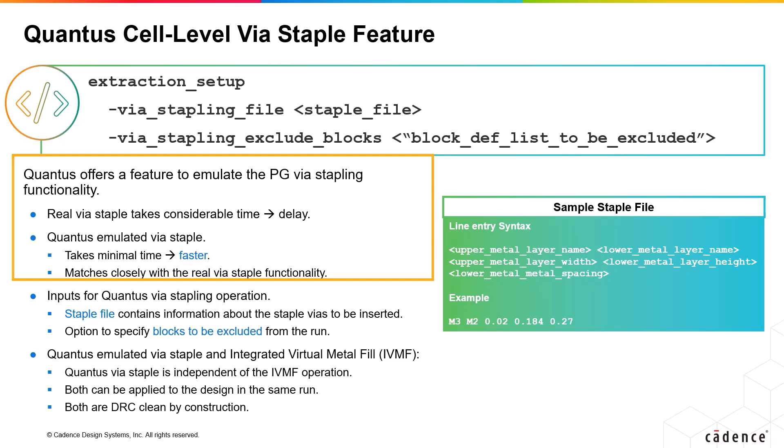Qantas offers a feature to emulate the power and ground VIA stapling functionality. The real VIA stapling can take considerable time, whereas the emulated VIA staple in Qantas takes minimal time and matches closely with the real VIA staple functionality. The corresponding CCL option is VIA stapling file, followed by an input file which contains information about the staple VIAs to be inserted. The staple VIAs are opportunistically inserted at regular spacing, though not guaranteed in all cases, along the PG wire and lower metal layers.